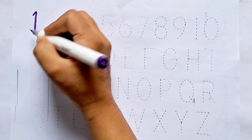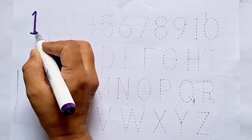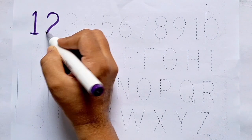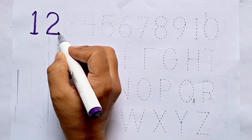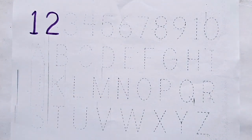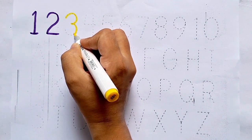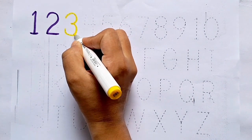1, this is 1. 2, this is 2. After 1 comes 2. 3, this is 3. After 2 comes 3.